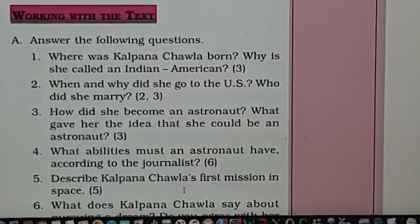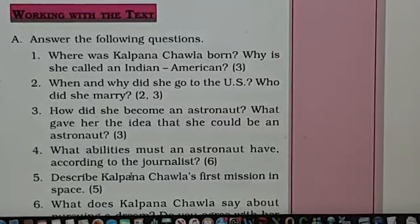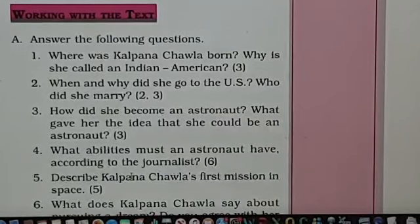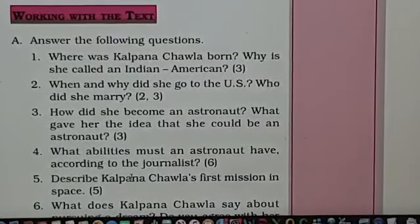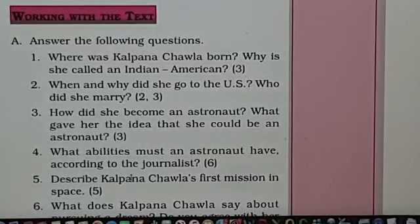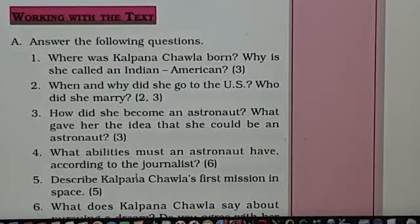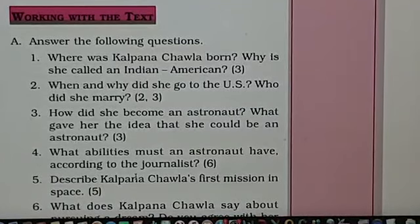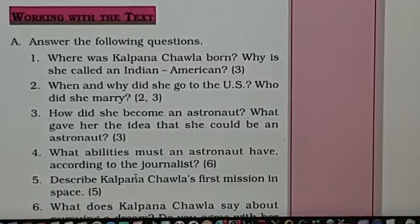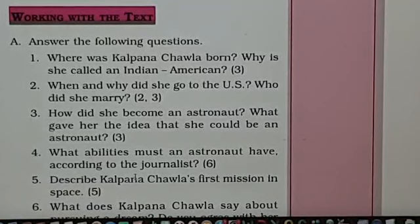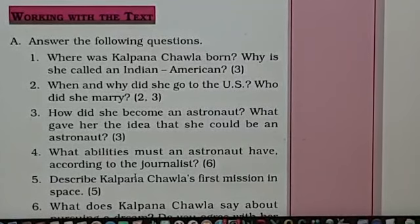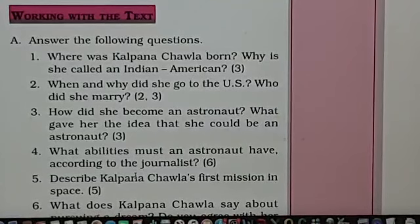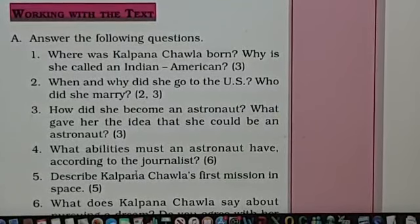Describe Kalpana Chawla's first mission in space. Her first mission in space lasted 15 days, 16 hours, and 34 minutes. She went around Earth 252 times, traveling 10.75 million kilometers. A Ukrainian and a Japanese astronaut were also among the crew members.